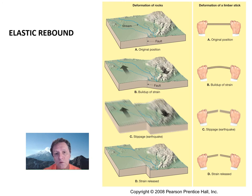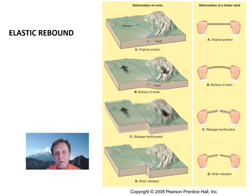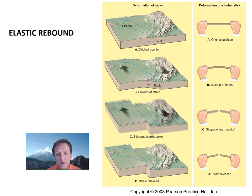When you talk about earthquakes, you need to talk about the properties of rock. One property geologists call elastic rebound means rock can be deformed, stretched, and stressed to some extent. But it reaches a point where the stress is greater than the strength of the rock, and at that point the rock will break, fracture, release energy, and cause waves of energy — seismic waves — to emanate through the rock.